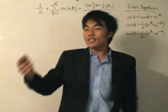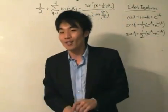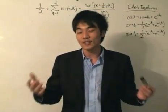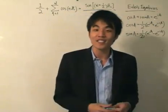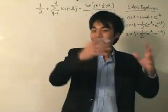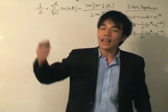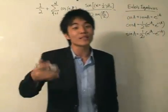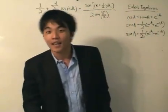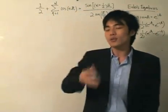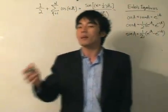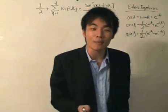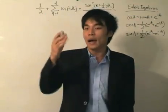Where we left off, we managed to write the partial sums of a certain Fourier series of a certain function in a nice equation. They had an integral sign in there, but there was also the summation sign in there. So that was really a problem because our first objective was to remove the summation sign.